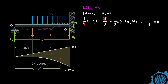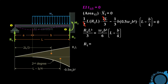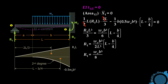Simplifying and rearranging, we have R1 times L cubed over 3 equals WOB cubed over 6 times the quantity (L minus B over 4). Solving for R1 by cross-multiplying L cubed over 3 to the right, R1 equals WOB cubed over 2L cubed times the quantity (L minus B over 4). Factoring one-fourth from inside the parenthesis gives us the final value of R1.